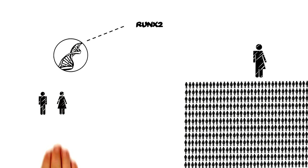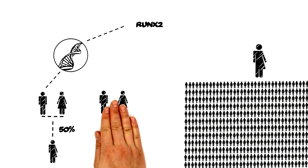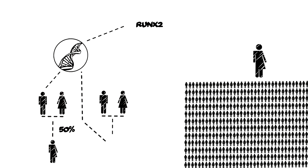If one parent carries the mutated gene, there is a 50% chance of them passing it on to their offspring. Even healthy parents can have a child with cleidocranial dysplasia if the mutation happens spontaneously.